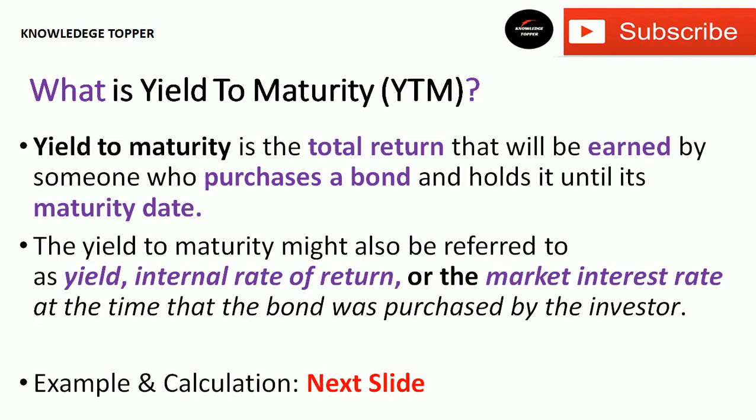Focus on the phrase 'yield to maturity' — it means the yield or total return an individual receives if they hold that bond until maturity. The definition: yield to maturity is the total return earned by someone who purchases a bond and holds it until the maturity date. YTM may also be referred to as yield, internal rate of return (IRR), or the market interest rate at the time the bond was purchased.